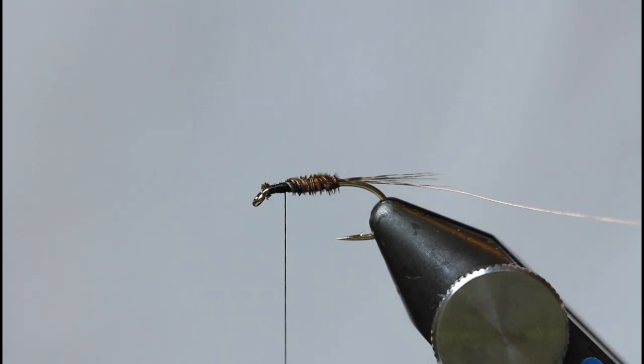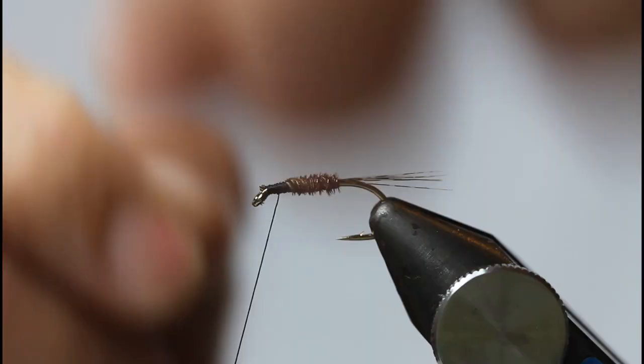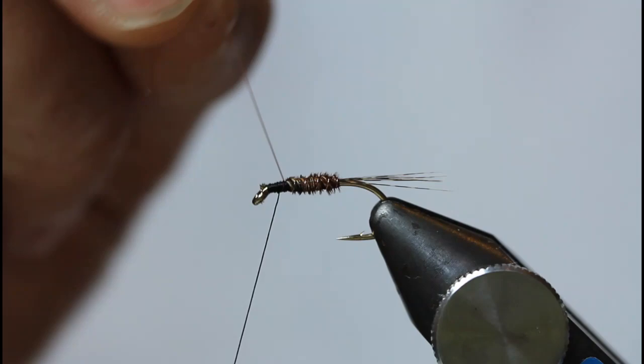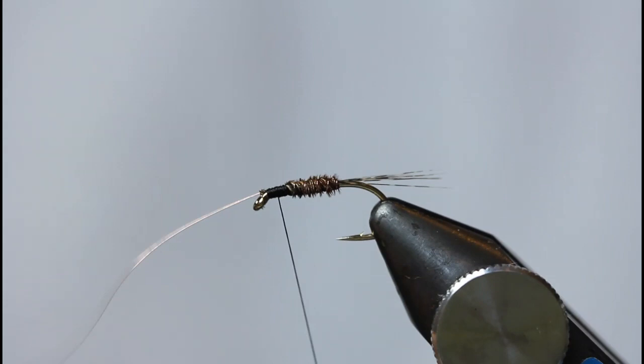The copper wire, this time what I'll do is I'll come up clockwise so I'm going against the grain of the feather, locking everything in place. I only want one, two, three, four—that's enough. Come up, lock in place on my side of the hook shank, keeping everything even. Wind up to the eye and take that off. So you've got your little thorax area.